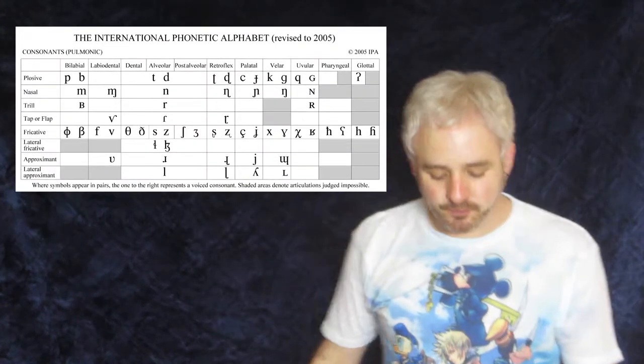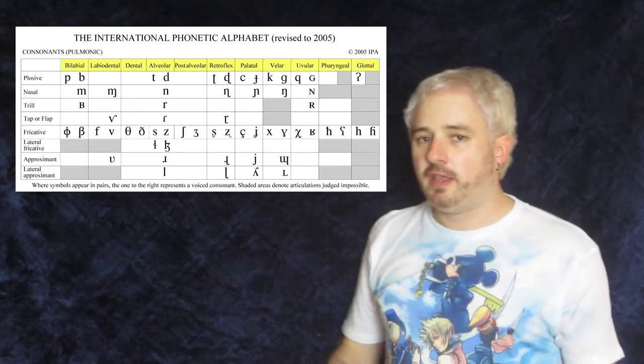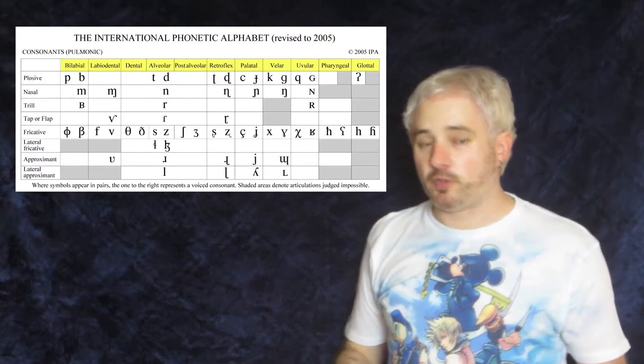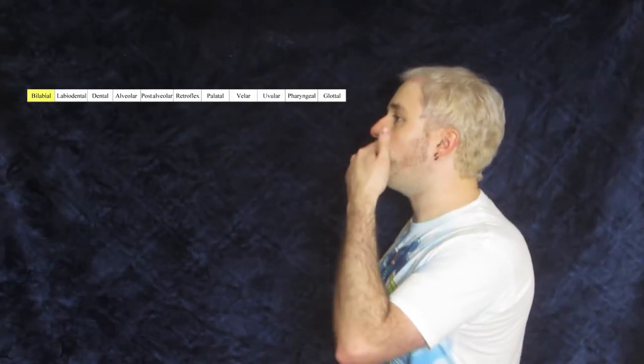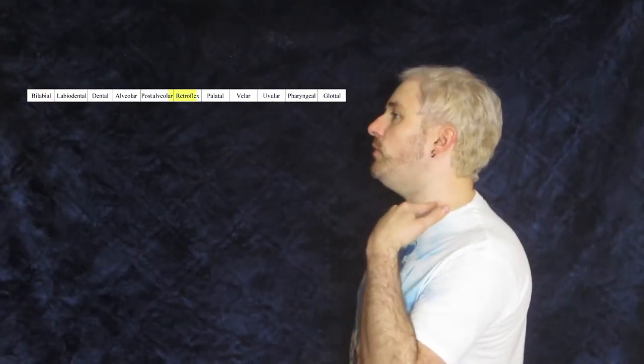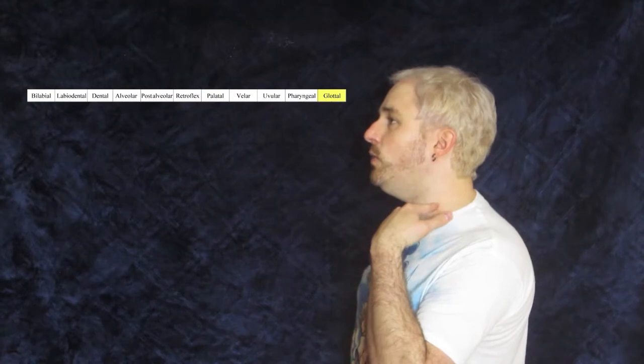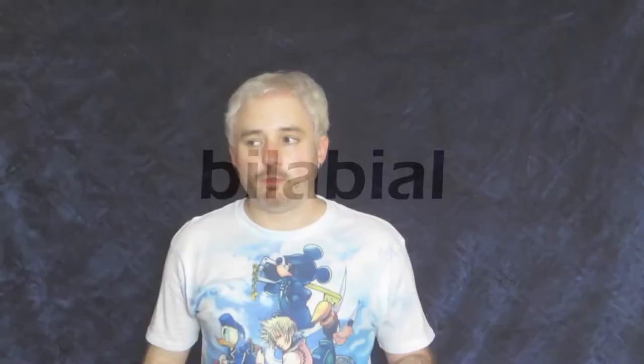Now to the top of the grid! The places of articulation — that's an actual term — are ordered from left to right, starting with the lips and going down the vocal tract to the glottis, which is technically the hole in between your vocal cords. First off you have bilabial, which is using both lips to make a sound, like an English B or a German W.